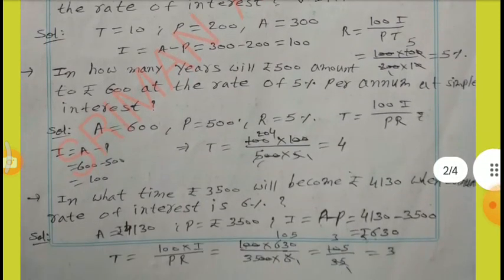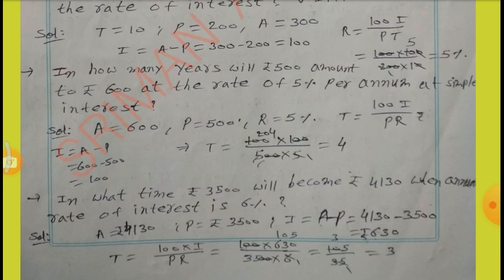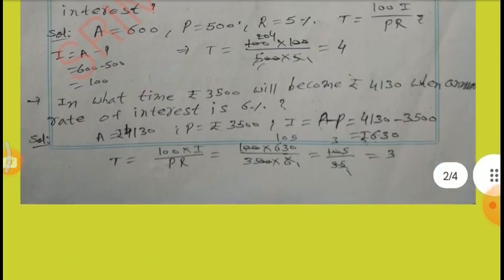In how many years will Rs.500 amount to Rs.600 at the rate of 5% per annum at simple interest? Here, A equal to 600, P equal to 500, R equal to 5%. First, find I: I equal to A minus P, 600 minus 500 equal to Rs.100. By substituting these values in T equal to 100 into I by PR, we get T equal to 4 years.